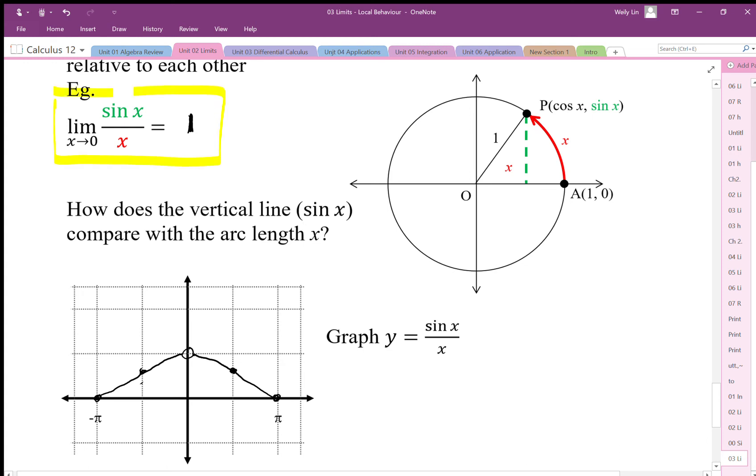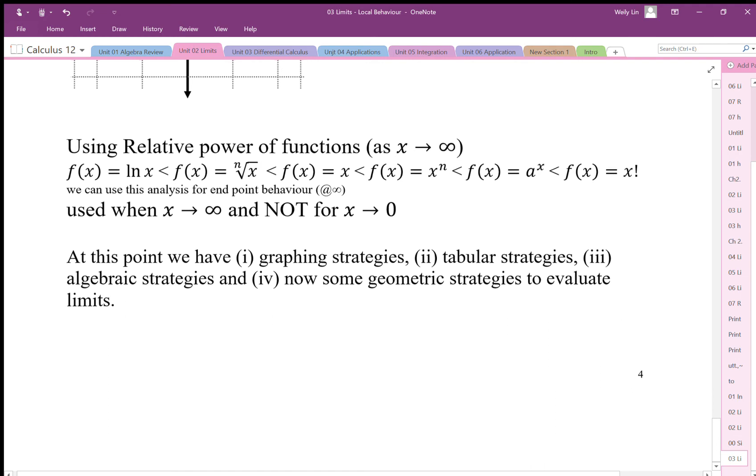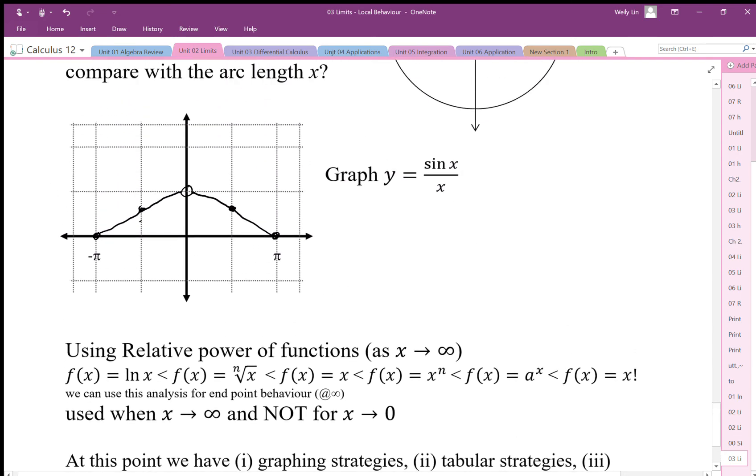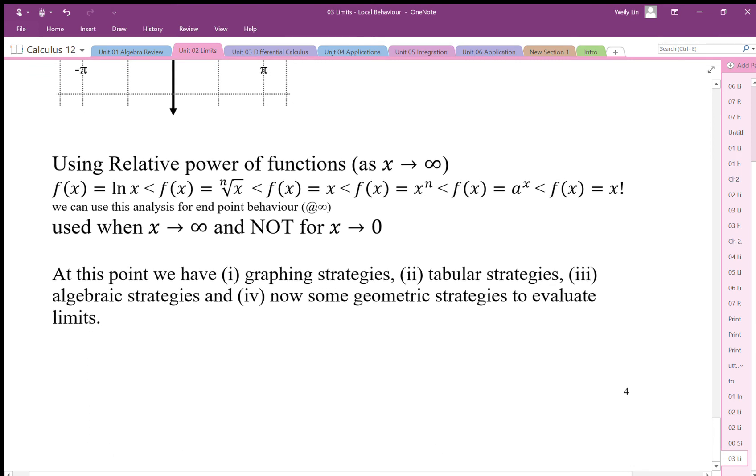When we do those local limits, this is local behavior here. But when we do limits at infinity, we can use endpoint behavior and we can use the relative strength of functions—weak over strong or strong over weak. As long as it's going to infinity, we can use this. But we cannot use this argument for local behavior, only for endpoint behavior.